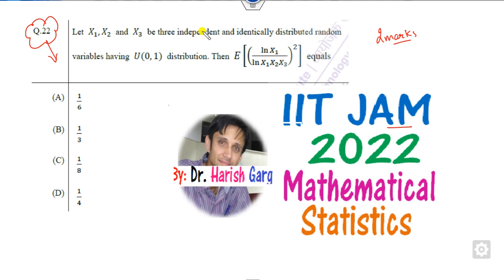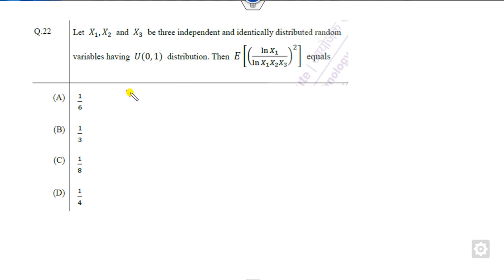The question is: if you have some xi's that are iid with the uniform distribution, how can you find the expected value of this random variable? That's a very simple task. You have x1, x2, and x3 following the uniform distribution over the closed interval, and you need the logarithm of xi.